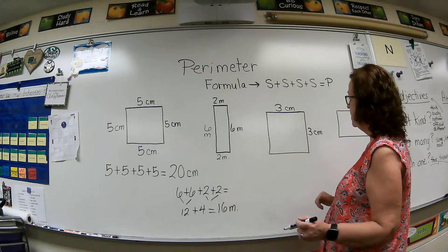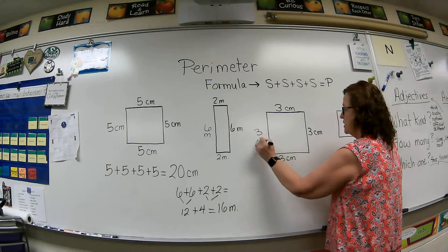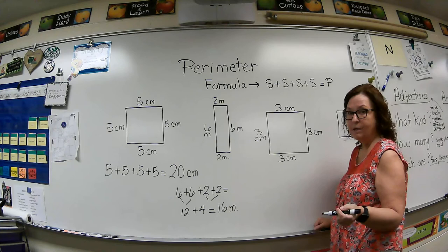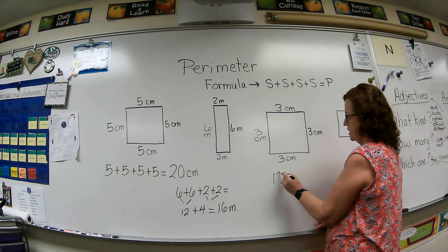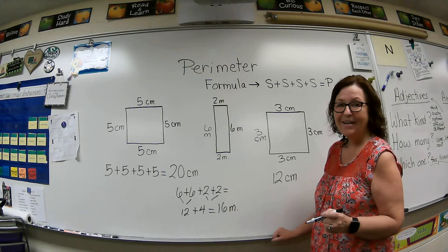All right. Here we have another square. Three centimeters by three centimeters. So that means this side is three centimeters. And this side is three centimeters. And this is what I could probably do in my head by counting by threes. Three, six, nine, twelve. Perimeter equals twelve centimeters. Like I said, easy peasy.